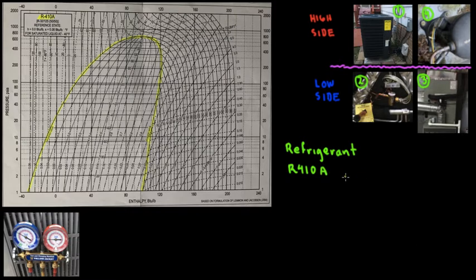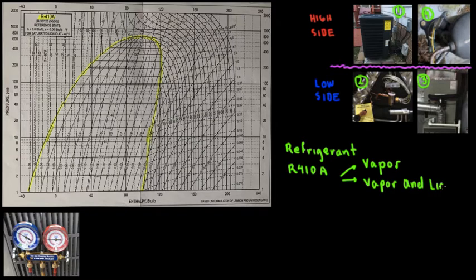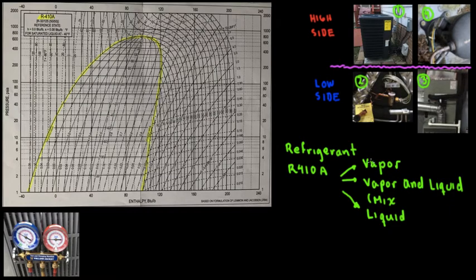That refrigerant is very interesting because it can be in three states. Number one, it can be in a vapor state. Number two, it can be in a vapor and liquid mix. Or number three, it can be in a liquid phase. How do we determine which state it's in? That depends on the pressure and temperature. The pH diagram is very useful because it tells you the state of the refrigerant and is also good for making calculations.